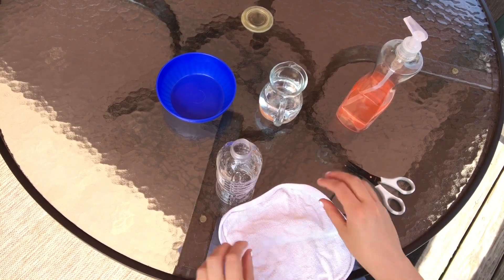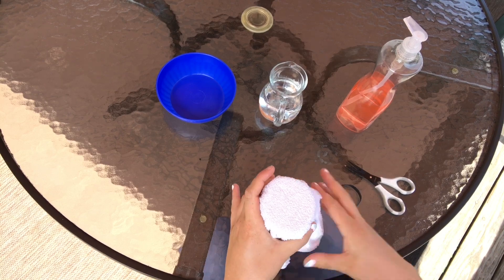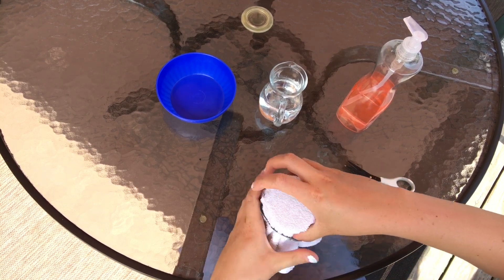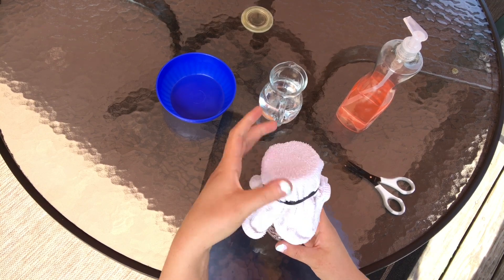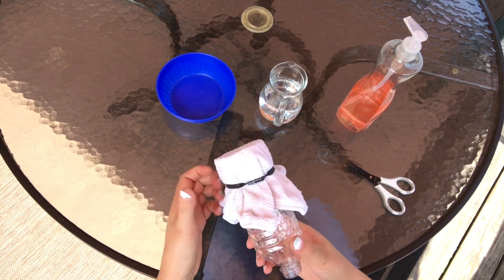Now I'm going to take my washcloth and attach it to the bottom of my water bottle with a rubber band. And if you had a sock, you would pull that over till it was flat on the end and then just fold the sock over so you can still reach the mouth of the bottle here.